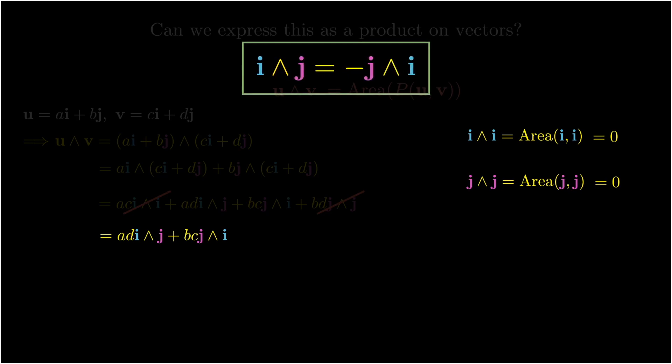In other words, we get the following anti-symmetric property, which is that i∧j is equal to minus j∧i. So when we switch the order with respect to this wedge operation, we pick up a minus sign.